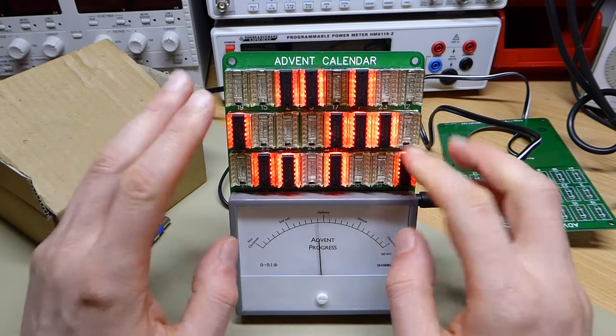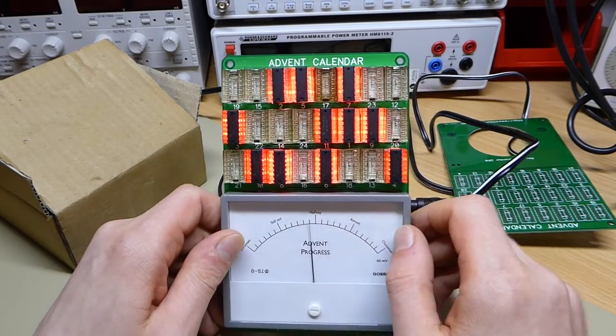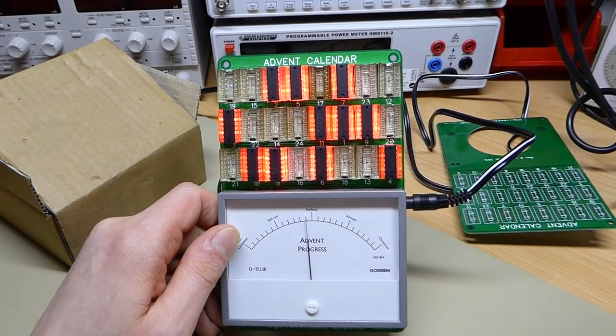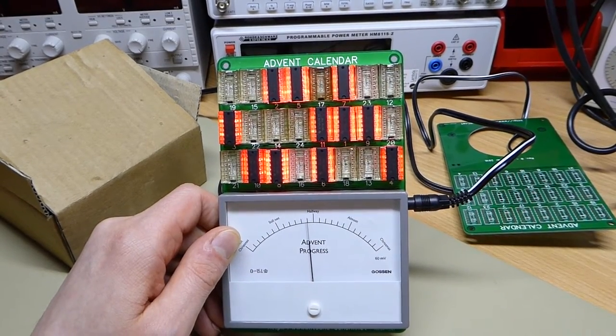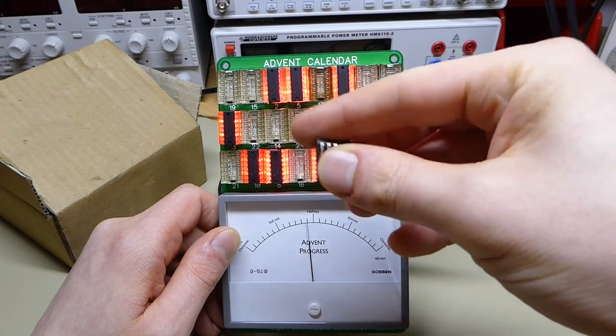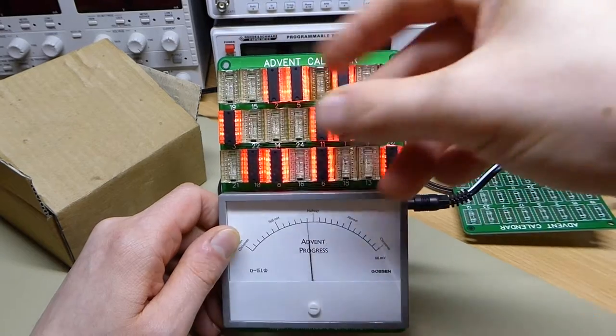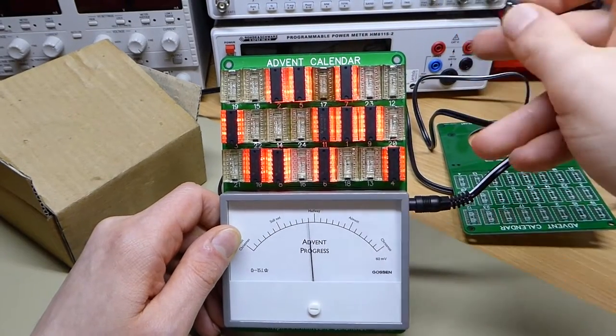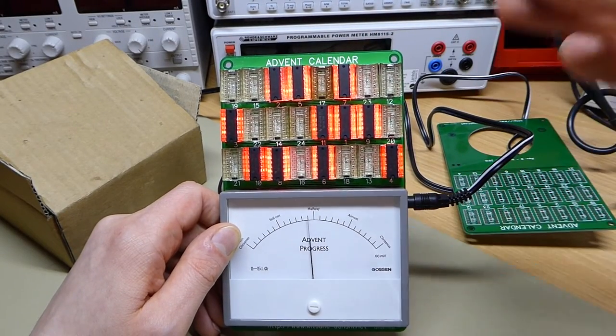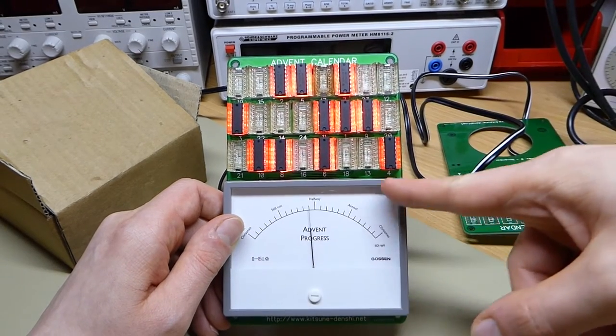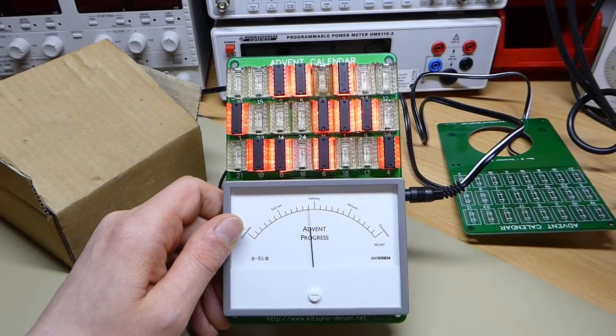One other feature of this advent calendar is that I have some logic built in to make sure the ICs are placed in the right order. These ICs are just inverters, so they can drive the LEDs and everything. But there's also logic to make sure the ICs are plugged in in the right order. For example, we're now up to day 11.